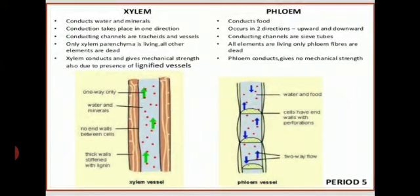In xylem, conduction takes place only in one direction, because water and minerals are present in the soil and are absorbed by the roots. The roots transport water and minerals throughout the plant in a single direction — from the roots to the tip of the plant.